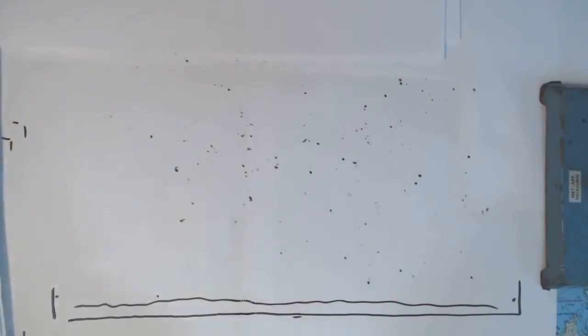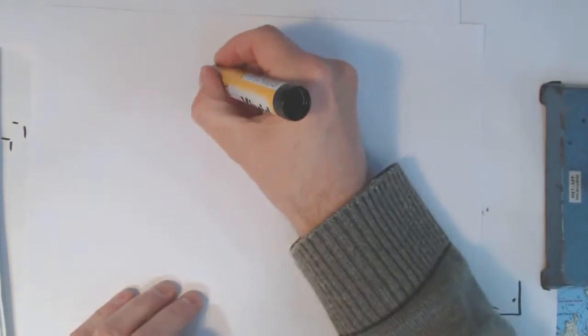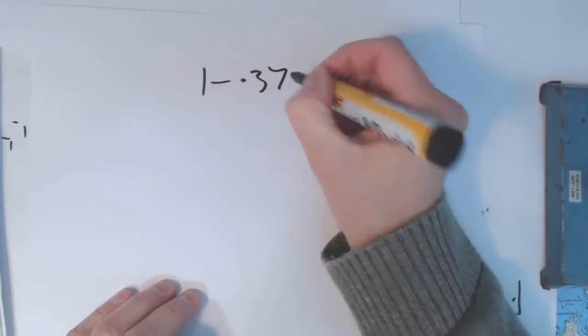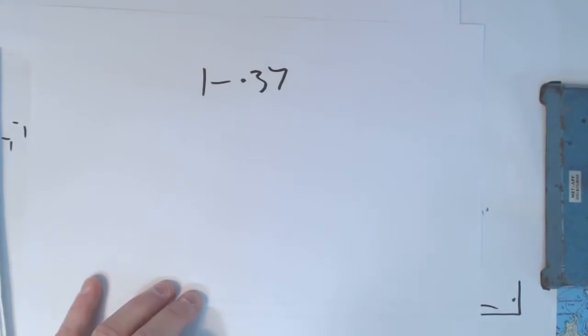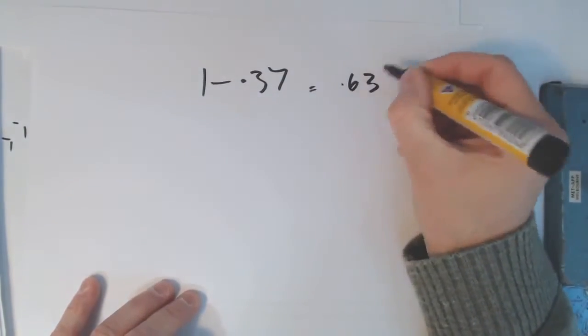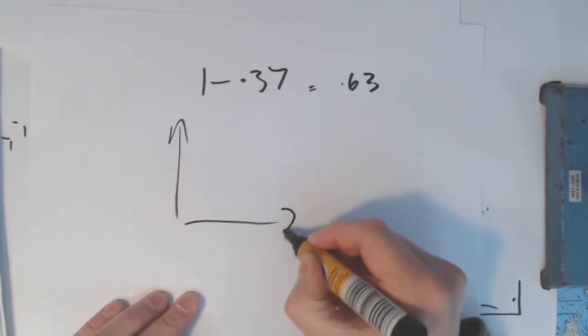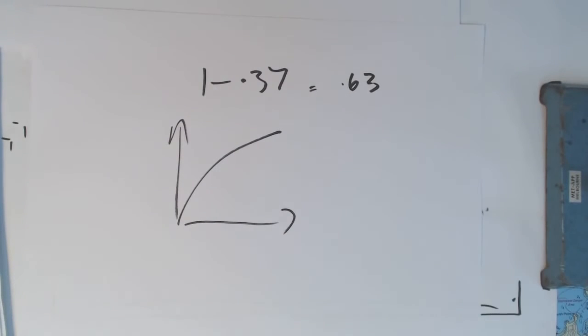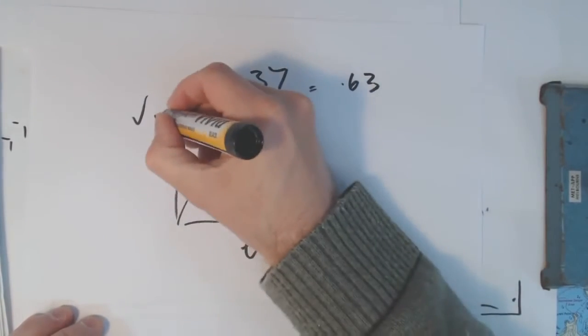Now the other number that's really important is 1 minus 0.37, which is 0.63. This is useful for graphs like this. And what it tells you, and this could be the charging graph. We've got voltage over time. It's charging up to the 12 volts.